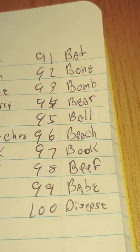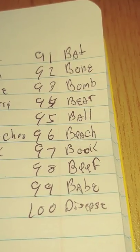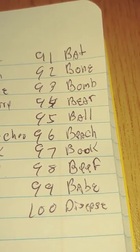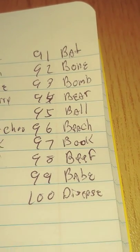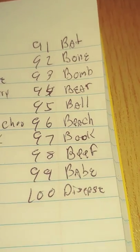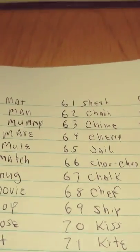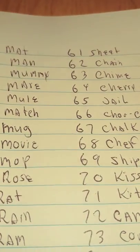Then we'll finish up here with 90 is bat, 91 is bat, 92 is bomb, 93 is bomb, 94 is bear, 95 is ball, 96 is beach, 97 is book, 98 is beef, 99 is babe, and 100 is disease. So that's the entire list, just review that as you will. Now I'm going to show you how you practice with these numbers.